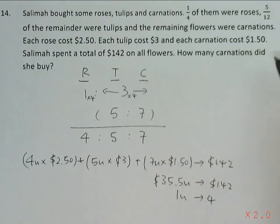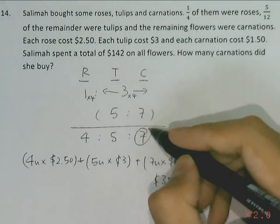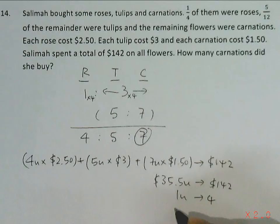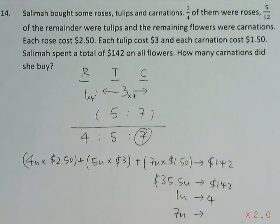So the question is asking, how many carnations did she buy? Carnations, we know there were 7 units. So we are finding what is 7 units. That will be 4 multiplied by 7, which gives us our answer of 28 carnation flowers.